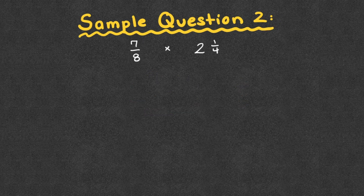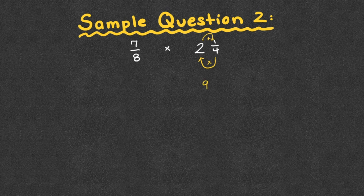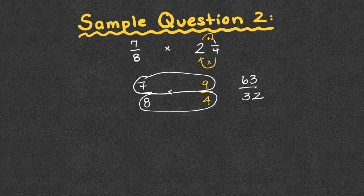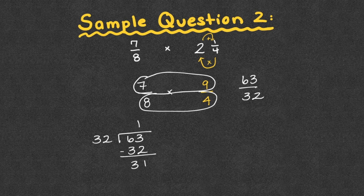Number two: seven-eighths times two and one-fourth. I notice I have a mixed number, so I turn it into an improper fraction: four times two is eight, plus one is nine — nine-fourths. So we have seven-eighths times nine-fourths. Looking diagonally, eight and nine share only a common factor of one; seven and four also share only one. So I multiply across: seven times nine is 63, eight times four is 32 — giving me 63 over 32. Converting to a mixed number: 32 goes in once, 63 minus 32 is 31. Final answer: one and thirty-one thirty-seconds.